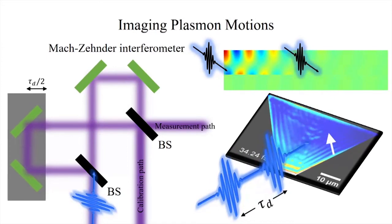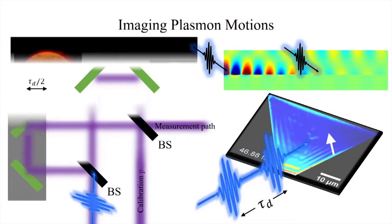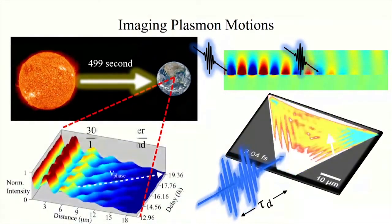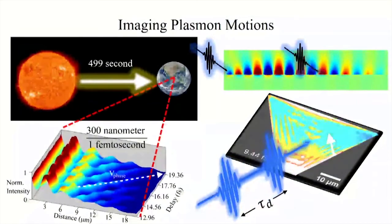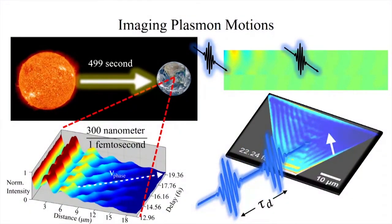Indeed, our movies show the fastest phenomena ever imaged. It takes light 499 seconds to travel from the Sun to the Earth, but in our microscope, we can capture as it propagates by 300 nanometers in each femtosecond.